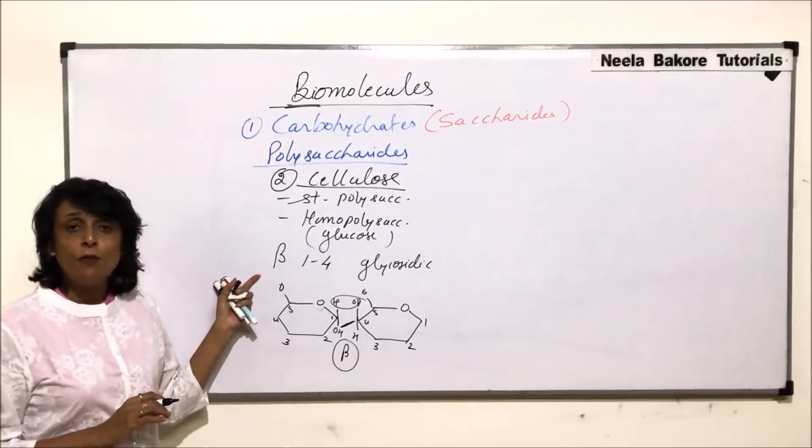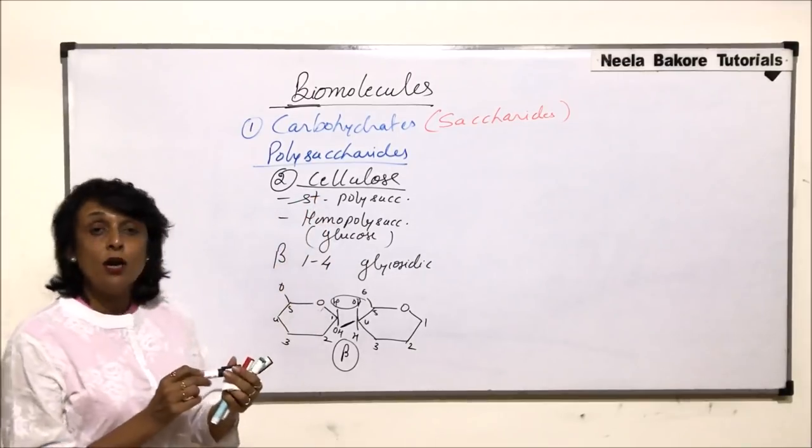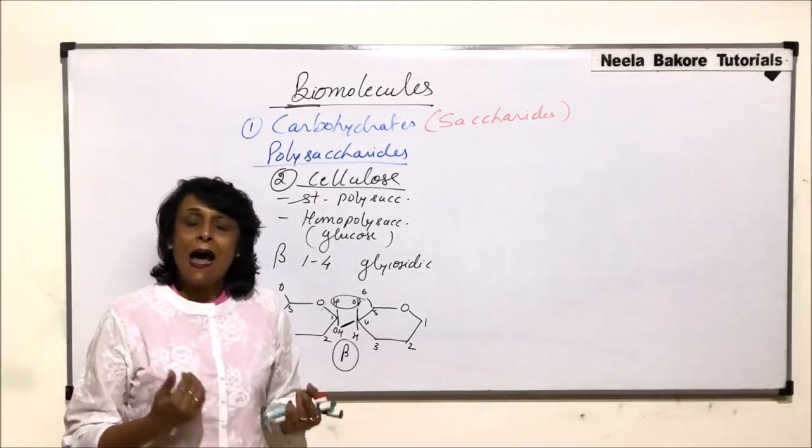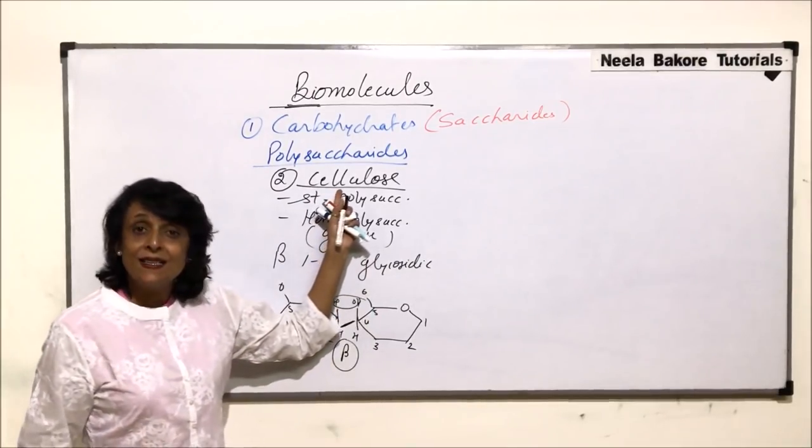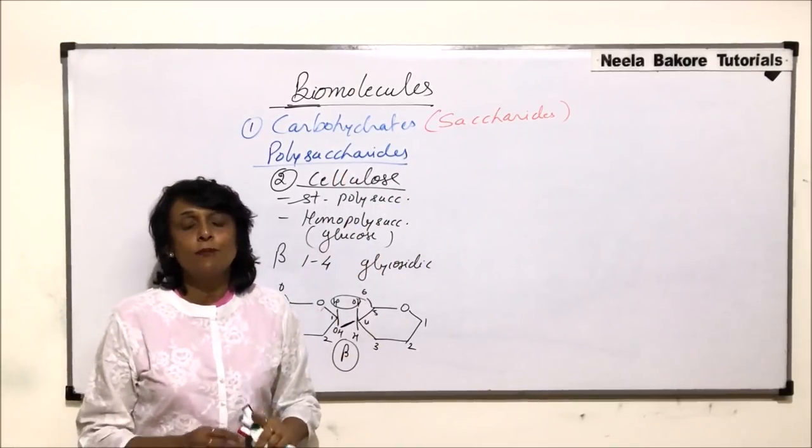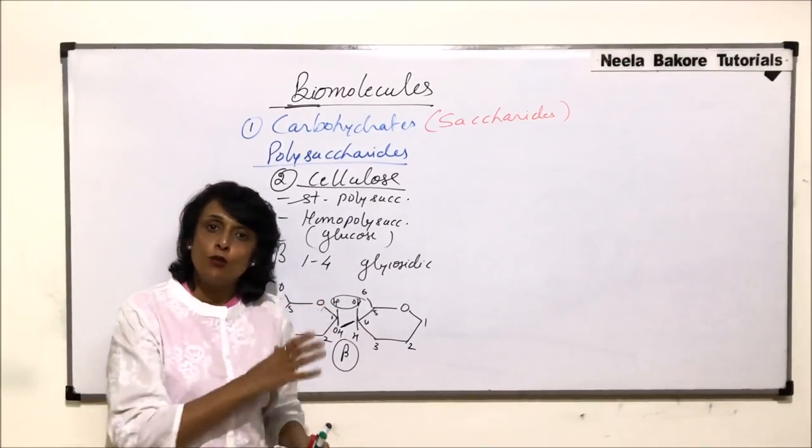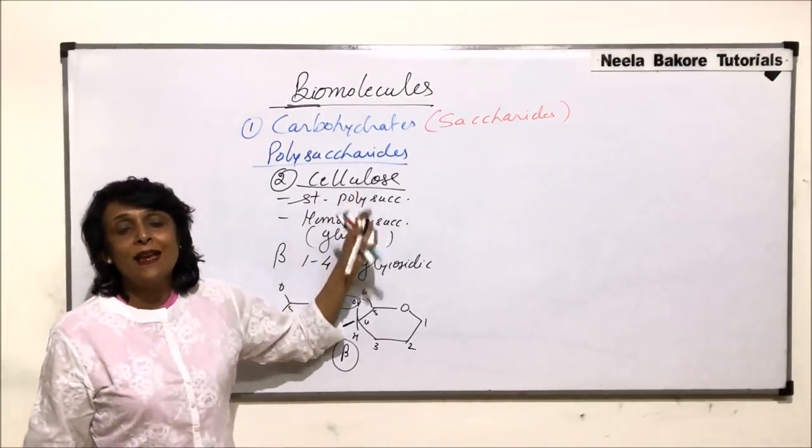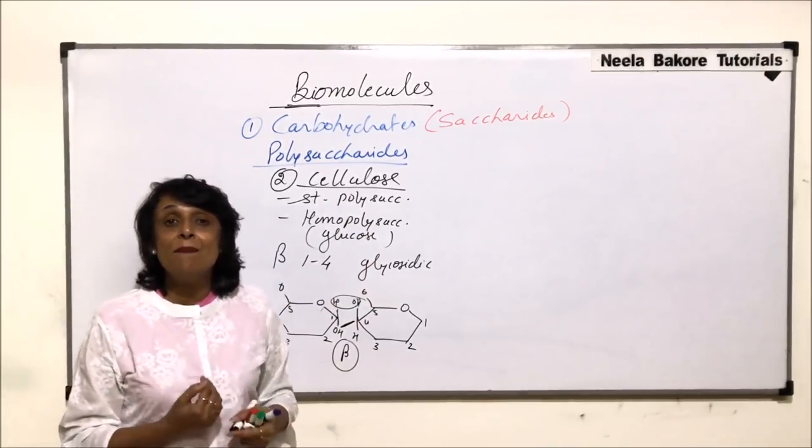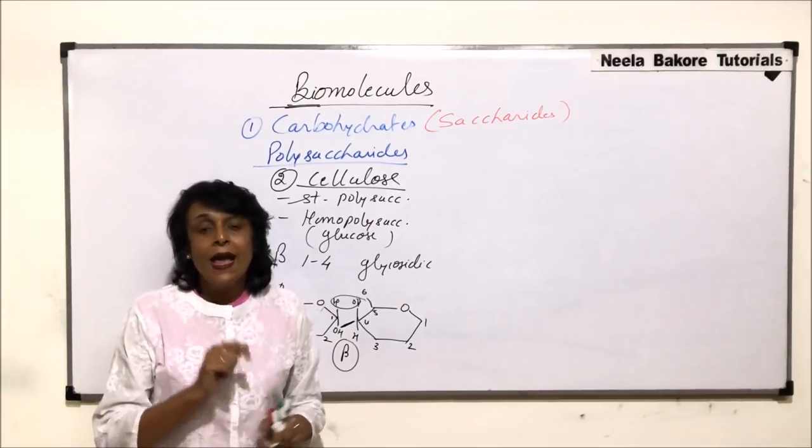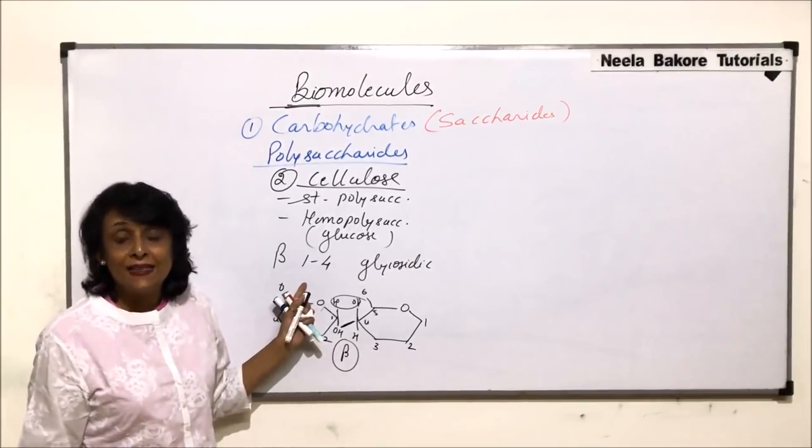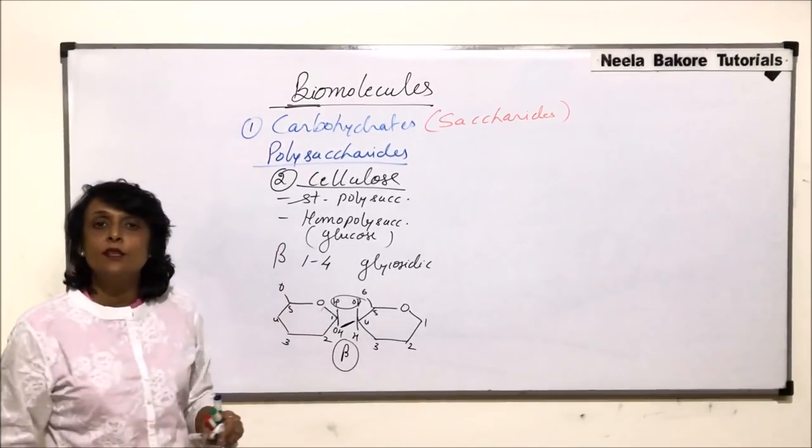So beta glycosidic bond which is present in cellulose cannot be broken down by animals like us. Then how do some animals digest this cellulose? This we have discussed in detail in the chapter of digestion. But quickly, animals like cows and buffaloes are able to digest cellulose because they have symbiotic bacteria in their stomach part, and this bacteria produces an enzyme called cellulase, and this enzyme is capable of breaking this bond.